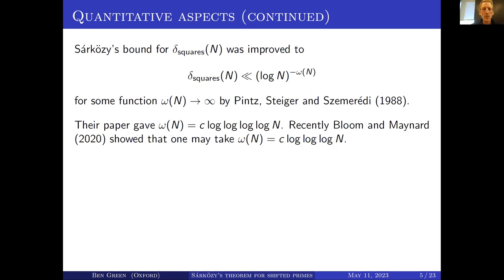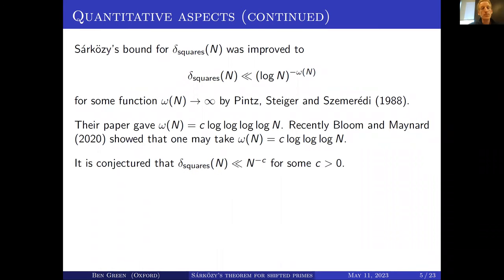More recently, Bloom and Maynard showed an improvement: that function ω(n) can be basically just a triple log. That's the best bound currently known for that problem.